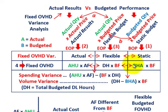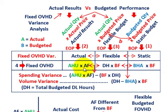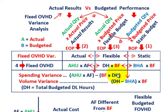For the static amount, that's taking our budgeted hours allowed or allocated for the period times some budgeted fixed rate. For our spending variance, that's just the difference between our actual and flexible amounts — we take actual hours used times the actual fixed overhead rate and subtract from it the budgeted fixed overhead rate times those denominator hours, which are our total budgeted direct labor hours for the period.